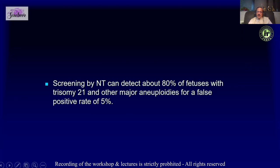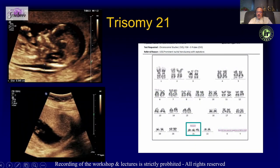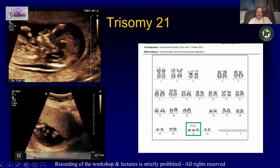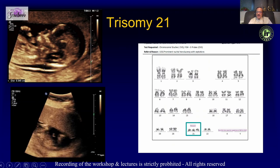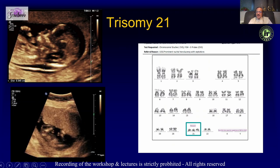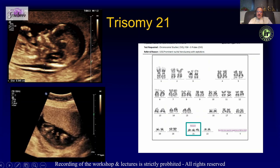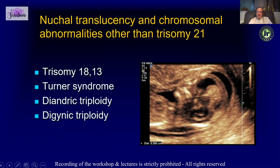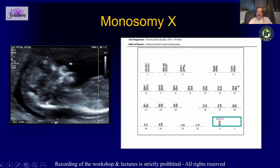Here for example we have an abnormal NT, we have done a CVS and karyotyping. Nowadays we can also do a microarray because the cost has become quite reasonable. We can not only pick up trisomy 21 but also other trisomies, triploidies, and even monosomies when there is an abnormal NT.